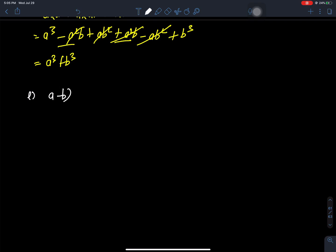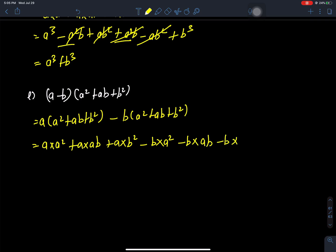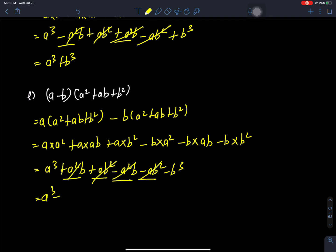Next identity: (a minus b)(a squared plus ab plus b squared). Expanding: a times a squared plus a times ab plus a times b squared, minus b times a squared minus b times ab minus b times b squared. This gives a cubed plus a squared b plus ab squared minus a squared b minus ab squared minus b cubed, simplifying to a cubed minus b cubed.